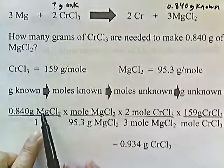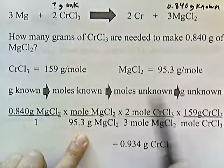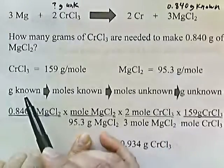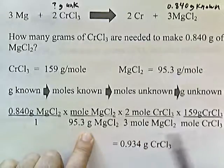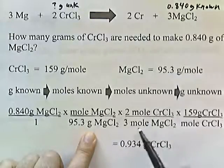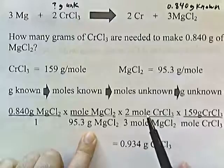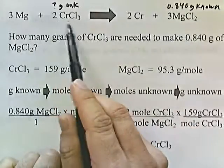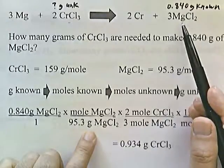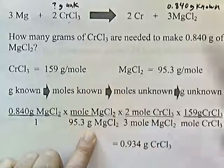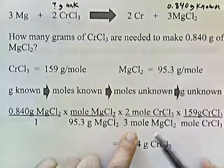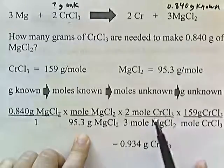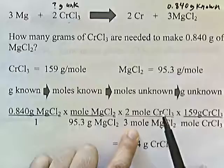Going from grams of known to moles of known: grams of magnesium chloride on top, so I put 95.3 grams of magnesium chloride on the bottom and one mole of magnesium chloride on top. Now from moles of known to moles of unknown: I have moles of MgCl₂ on top, so I need moles of MgCl₂ on the bottom. Two moles of chromium chloride produce three moles of magnesium chloride, so three moles of magnesium chloride go on the bottom and two moles of chromium chloride go on top. Magnesium chlorides cancel, leaving moles of chromium chloride.